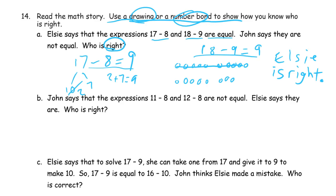The words that you need to spell are usually right in the question. John says that the expressions 11 minus 8 and 12 minus 8 are not equal. Elsie says they are. Who is right? Well, you might see right off that if you're subtracting 8 from two different numbers, you're going to get two different answers. So you should know right off that they're not equal, but you have to do something to show it.